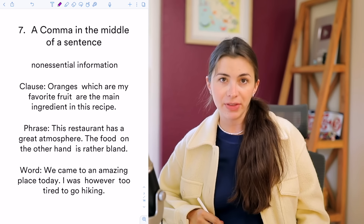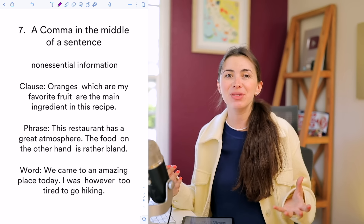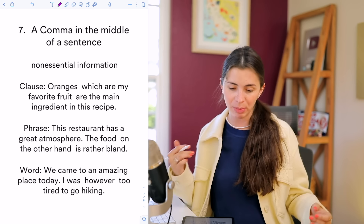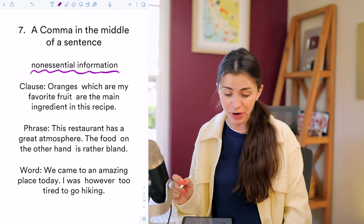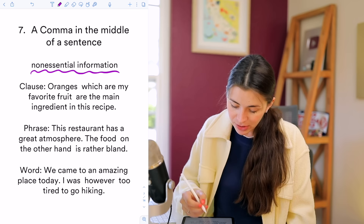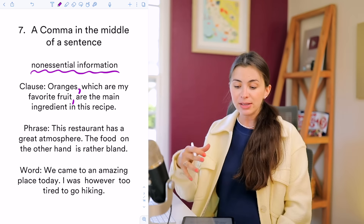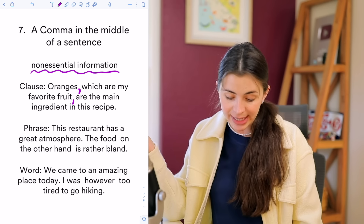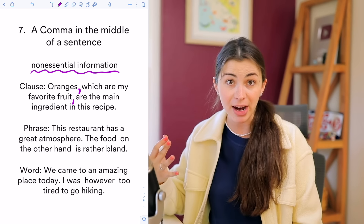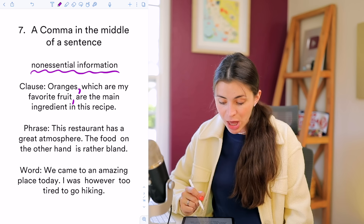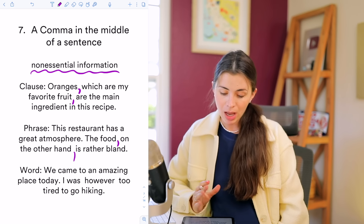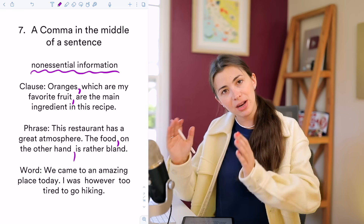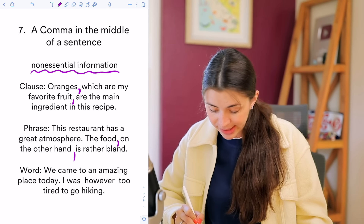Sometimes we put commas in the middle of a sentence when there's non-essential information — something that adds value but can be omitted or moved without changing the meaning. Example with a clause: 'Oranges, which are my favorite fruit, are the main ingredient in this recipe.' You can omit 'which are my favorite fruit' and the sentence still makes sense. Example with a phrase: 'This restaurant has a great atmosphere; the food, on the other hand, is rather bland.' The phrase 'on the other hand' is separated with commas.